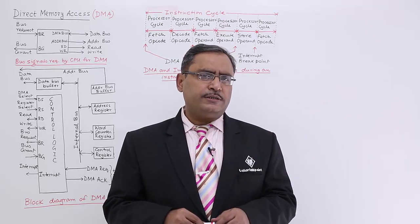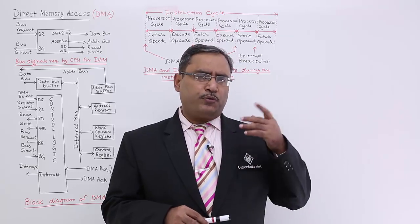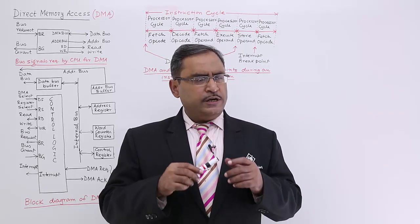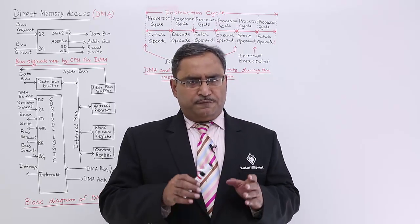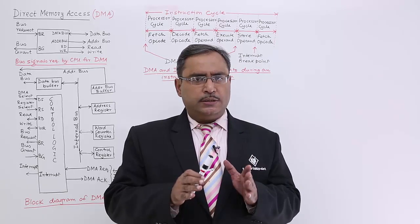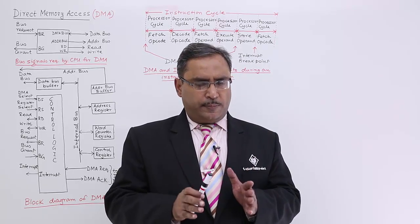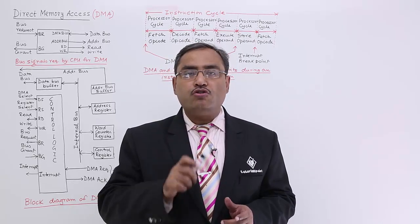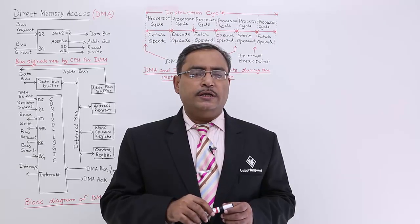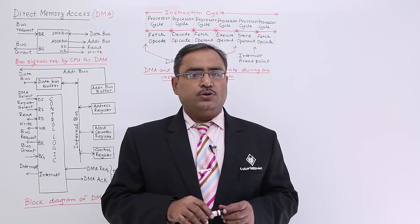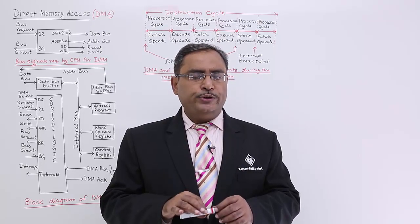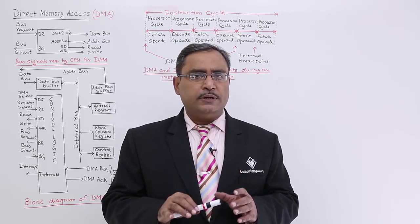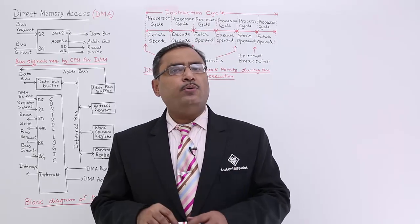The processor is for high-end activities: for the execution of the program, processing of the program, processing of micro instructions, generating different control signals, and so on. So it is better if the processor can delegate this particular job to one of the controllers, and this controller will be known as the DMA controller. The DMA controller is the controller which will take responsibility for data transfer between the computer's memory and the IO devices.